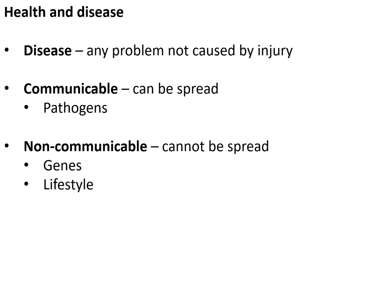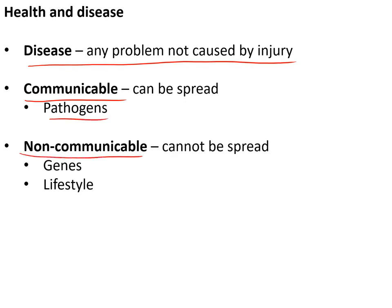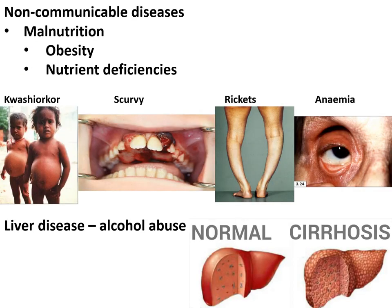Topic five: health and disease. Disease is any problem with a body not caused by injury. Communicable diseases can be spread and are caused by pathogens. Non-communicable diseases cannot be spread and are caused by either your genes or your lifestyle.